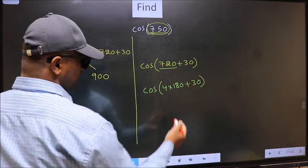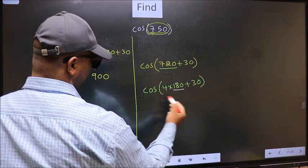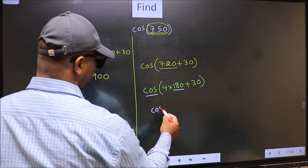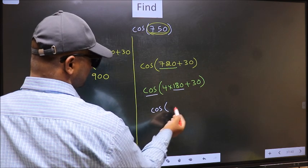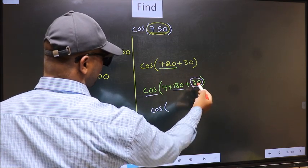Next. Here we have 180. So cos is not going to change. It will remain cos. And inside we get this angle 30.